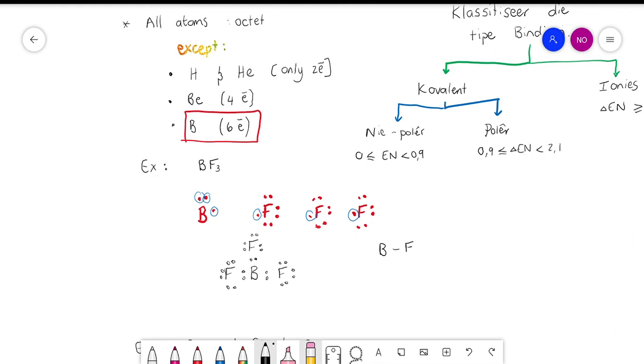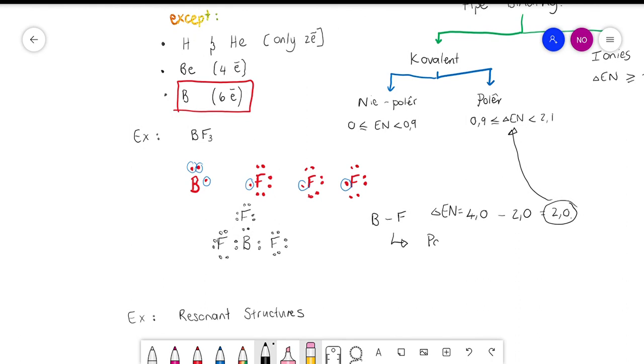So what you must do is you must go and say the electronegativity for fluorine is 4.0, and the electronegativity for boron is 2. You just subtract the biggest one from the smallest one to find the change in electronegativity, and that is equal to 2. And now you just go and place that within one of our intervals. So 2 lies between 0.9 and 2.1. In other words, this bond will be a polar covalent bond.